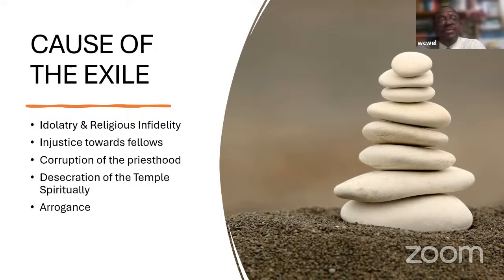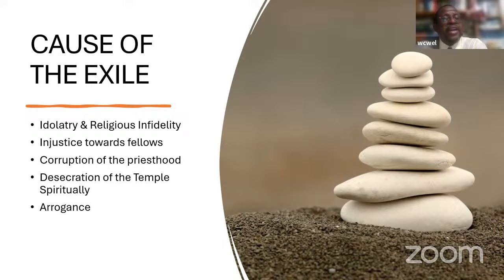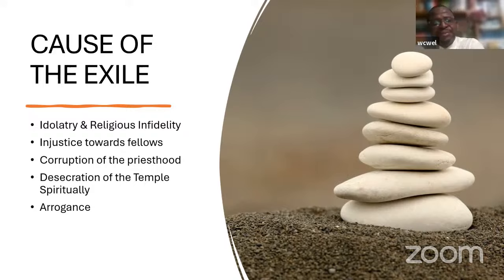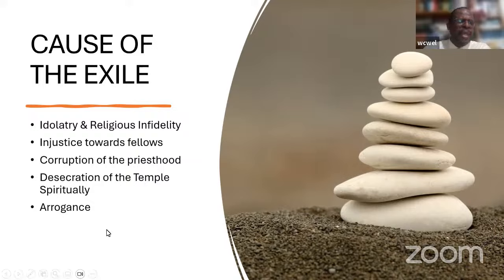When Amos came to prophesy, the high priest told him, 'Go back to where you came from.' For the priest, the worship was not really important — it was just his job and his income. Holiness was not important. Amos had to say he was not a priest. God had to bypass the priestly lineage and find a man who was a shepherd and a keeper of sycamine — a farmer — and raise him up to be the prophet.